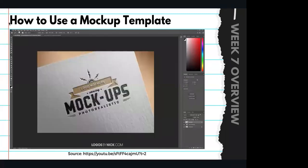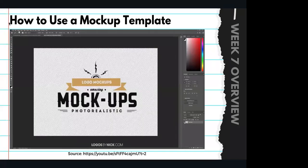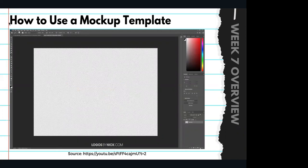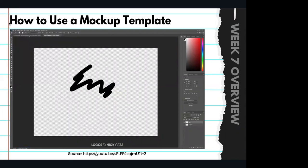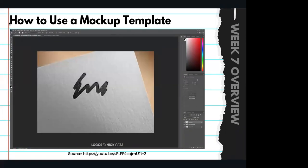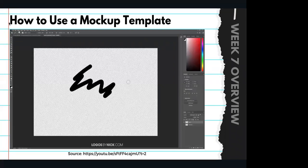Once you've identified that layer, you just have to double-click the little thumbnail icon, and it'll open up the example design in a new tab. This design represents what's applied to the mock-up. You can turn off the visibility of that design, add a new layer, paint something, then go to File > Save, and you'll notice the change has been applied to the template. If you already have a design you'd like to apply, let me show you how to do that.